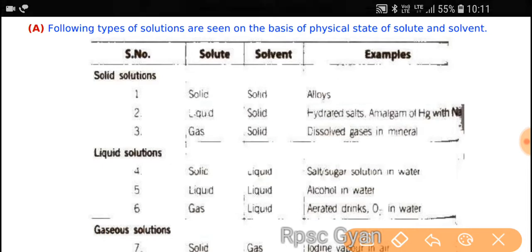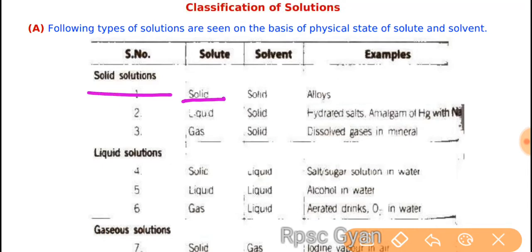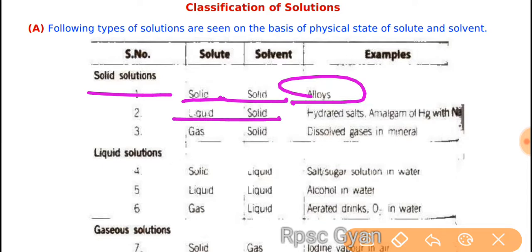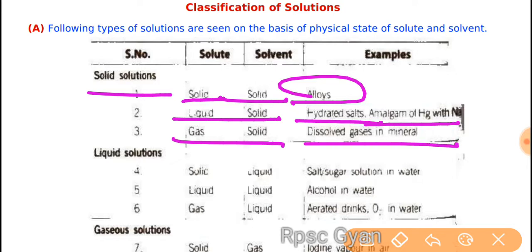The first is the solid solution, in which the solid will be solute and the solid will be solvent — like alloys. The solvent is solid and the solute is also solid. Next is liquid-solid: solute is solid and solvent is solid, like hydrate salt and amalgam of mercury with sodium. Gas in solid solution: the dissolved gases in minerals. These are the solid solutions.